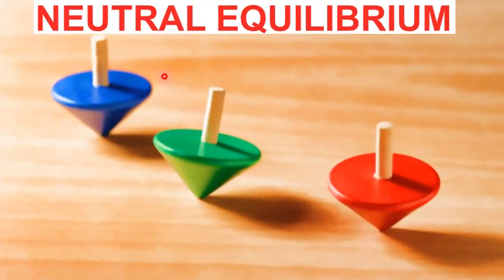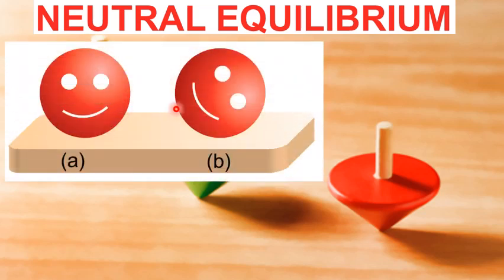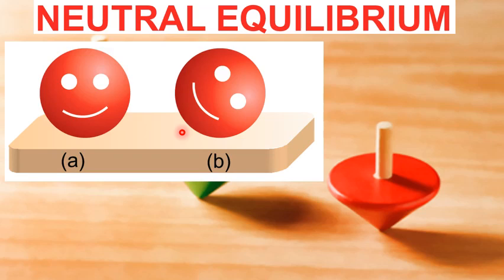Neutral Equilibrium. Take a ball and place it over a horizontal surface, as you can see in this figure. Roll the ball over the surface and leave it after displacing it from its previous position. It remains in its new position and does not return to its previous position. This is called Neutral Equilibrium. In neutral equilibrium, all new states in which a body is moved are stable states and the body remains in those new states.